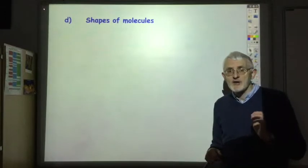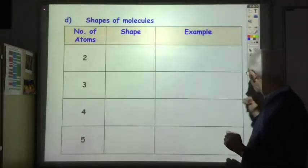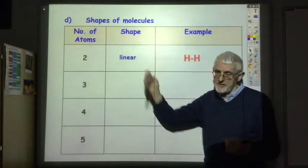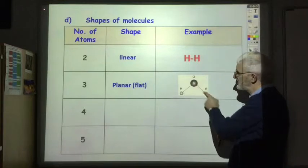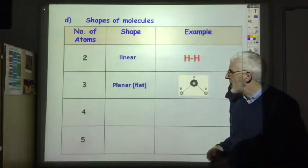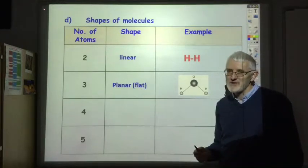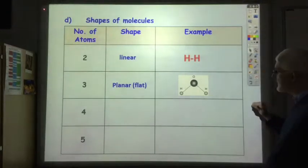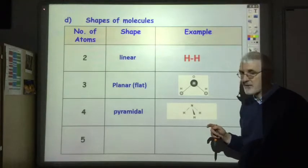Quite often you get asked about the shapes of molecules. The shape just depends on the number of atoms in the molecule. With only two atoms, like H2, the shape is linear. With three atoms, like water, you get a V-shaped structure - referred to as planar, flat, angular, or bent. With four atoms, the shape is pyramidal; NH3 is an example that forms a pyramidal molecule.